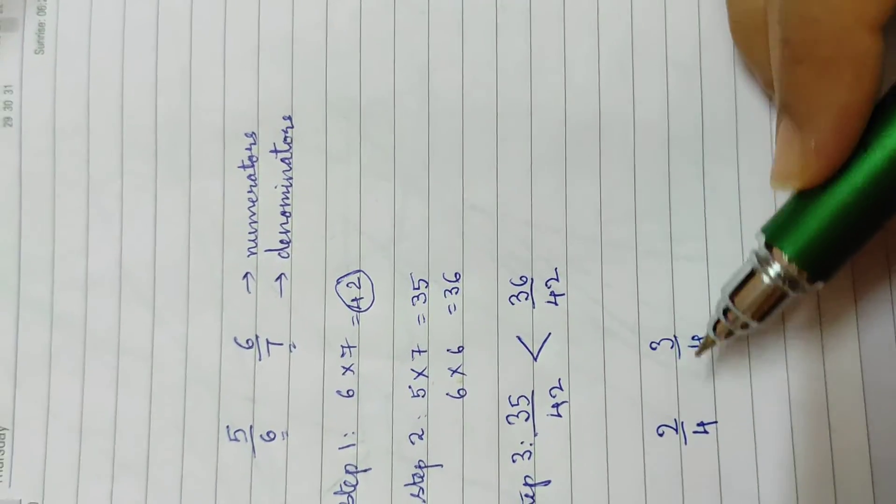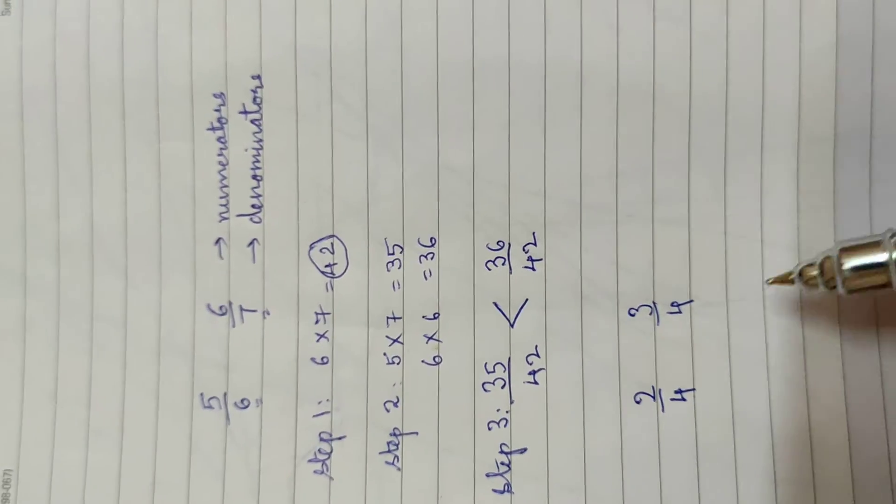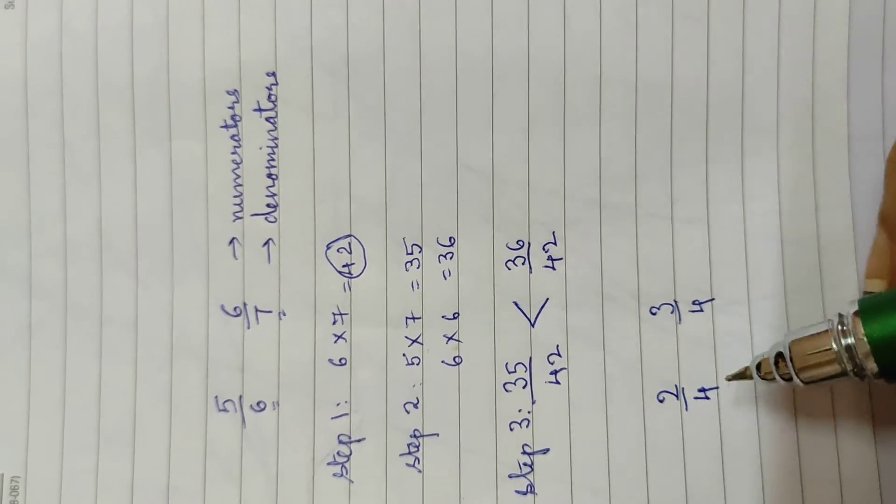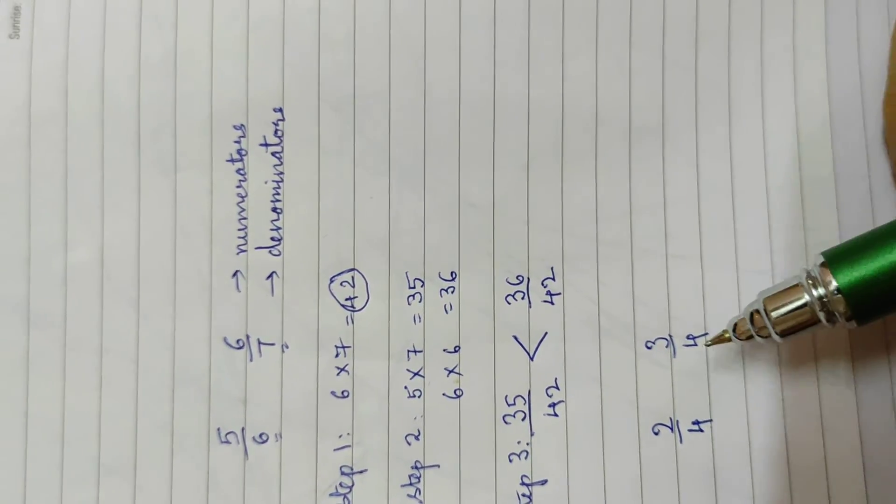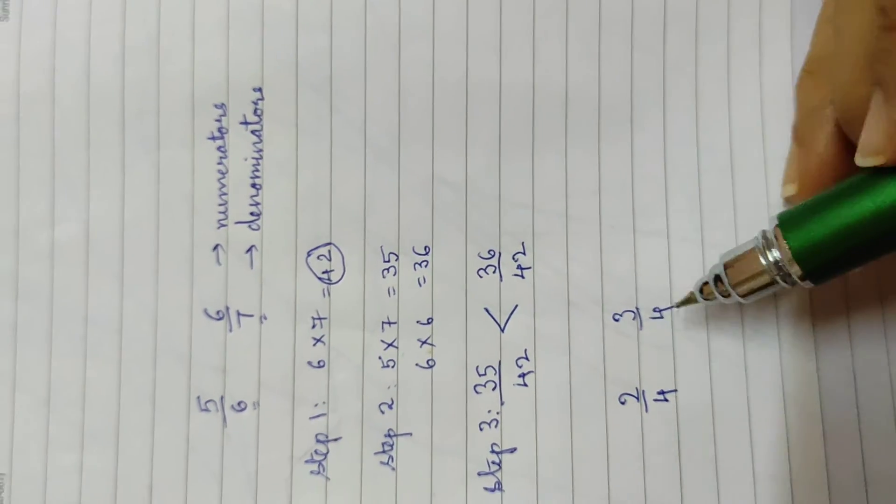And I'm wondering if 2 by 4 is a bigger fraction or is 3 by 4 a bigger fraction, and it's obvious to me that 3 by 4 is a bigger fraction. If I'm getting 2 fourth of the cake, which is also equal to half the cake, versus me getting 3 fourth of the cake.